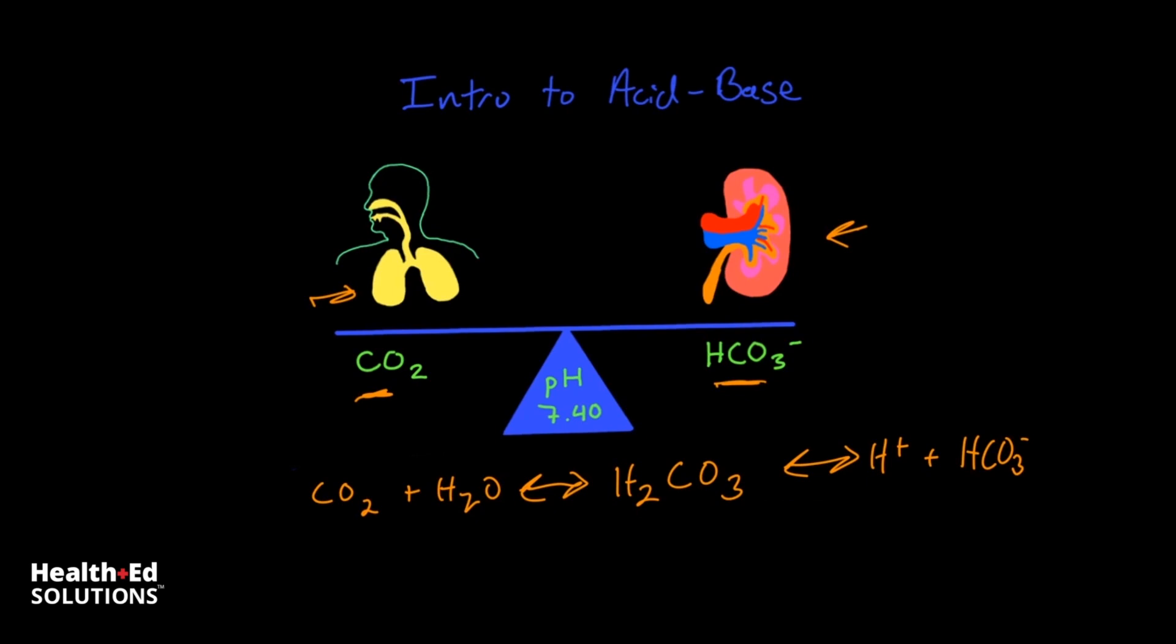So the lungs regulate acid base in the body by controlling the amount of CO2 that is dissolved in the blood. So by increasing or decreasing ventilation or exhalation of CO2, the lungs can maintain pH by controlling this amount of this volatile acid, which will in turn control the amount of carbonic acid in the body.